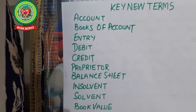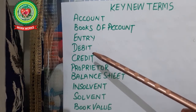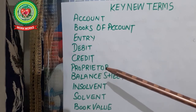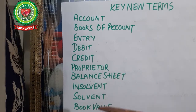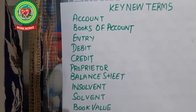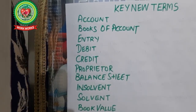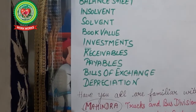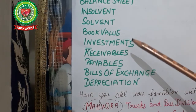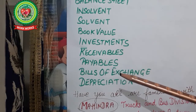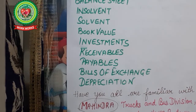The key terms include: account, books of account, entry, debit, credit, proprietor, balance sheet, insolvent, solvent, book value, investments, receivables, payables, bills of exchange, and depreciation. These terms are not very new to you — many of you are already aware of several of these elements.